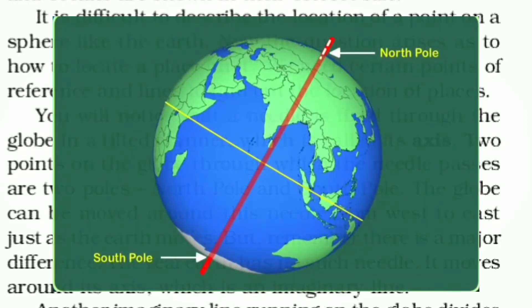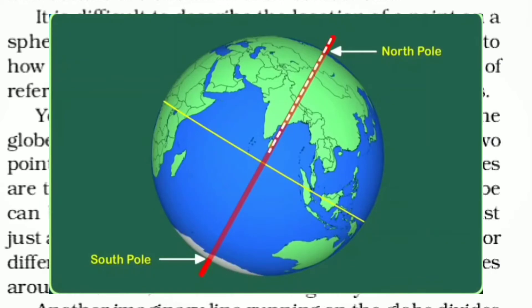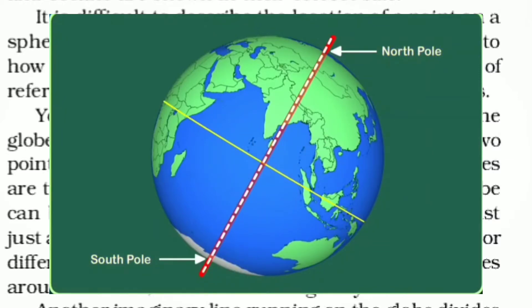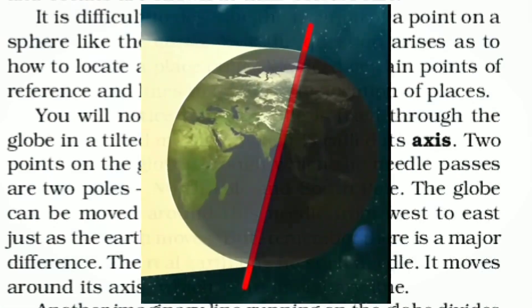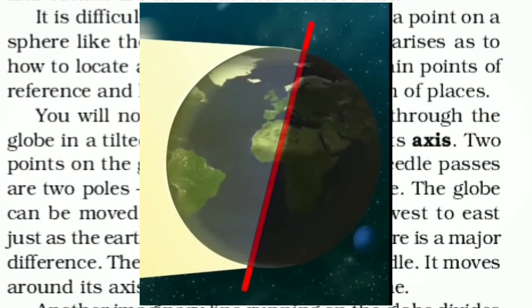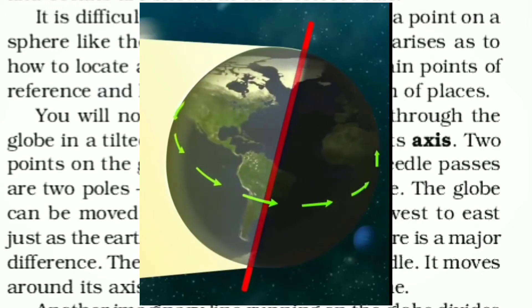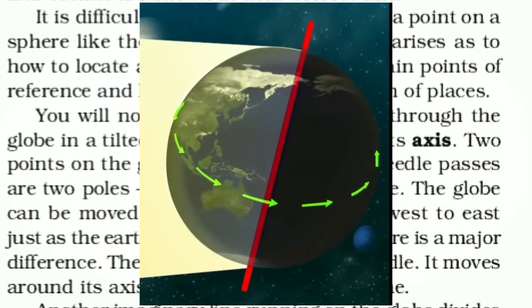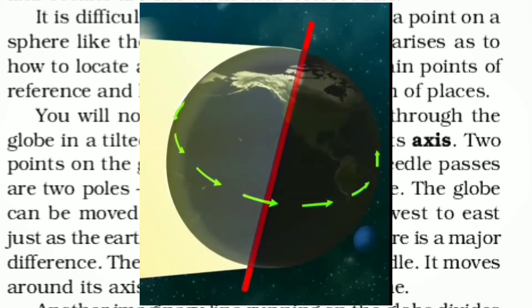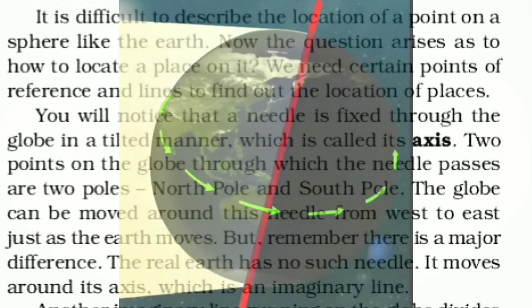A needle is fixed through the globe in a tilted manner, which is called its axis. Two points on the globe through which the needle passes are the two poles — North Pole and South Pole. The globe can be moved around this needle from west to east, just as the Earth moves. But children, the real Earth has no such needle. It moves around its own axis, which is an imaginary line.